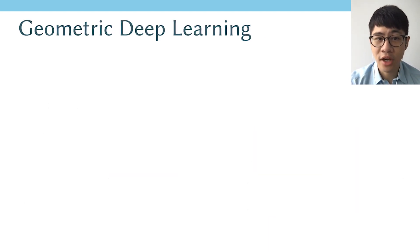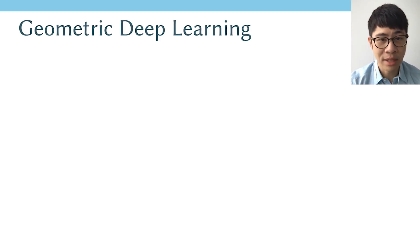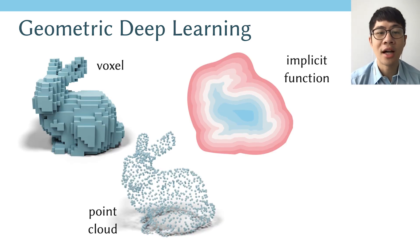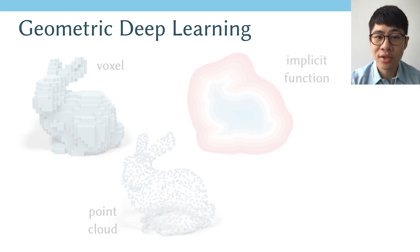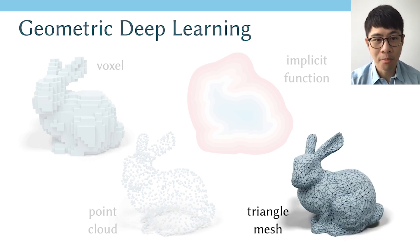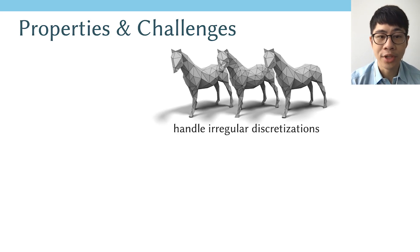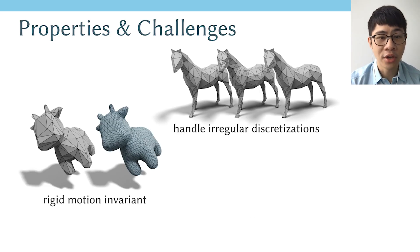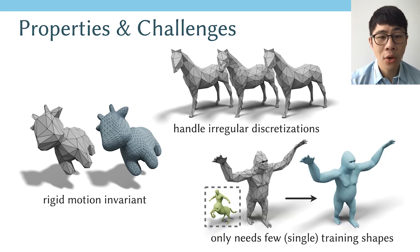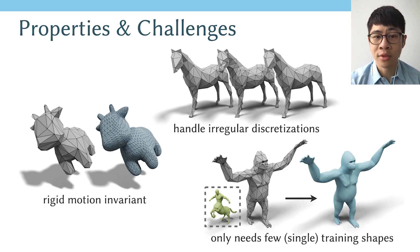This belongs to the recent trend of Geometric Deep Learning, a research field where we try to apply machine learning models to geometric data. Recently, people have studied many different representations such as voxels, point clouds, or implicit functions. However, in this paper we focus on triangle meshes. I will be talking about key ideas that allow us to handle irregular discretizations and make the network invariant to rigid motions. In our experiments, we noticed that our network is extremely data efficient — we only need a single training shape and are able to generalize to subdivide shapes not seen in training.